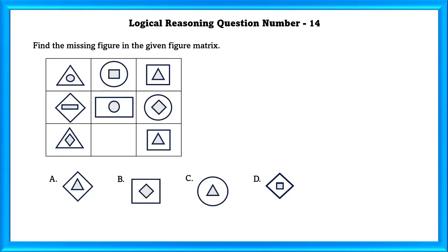Logical Reasoning Question Number 14: Find the missing figure in the given matrix. In the first column, the circle which is inside is becoming the outside in the second column. Similarly, the square inside is becoming the outside part in the third column. The same thing happens in the second row. So if we see from this logic, we can tell that D is the correct option. Now we will check it. The diamond inside the figure is being the outside in the second column, and the square inside is becoming the outside in the third column. So our answer is D.